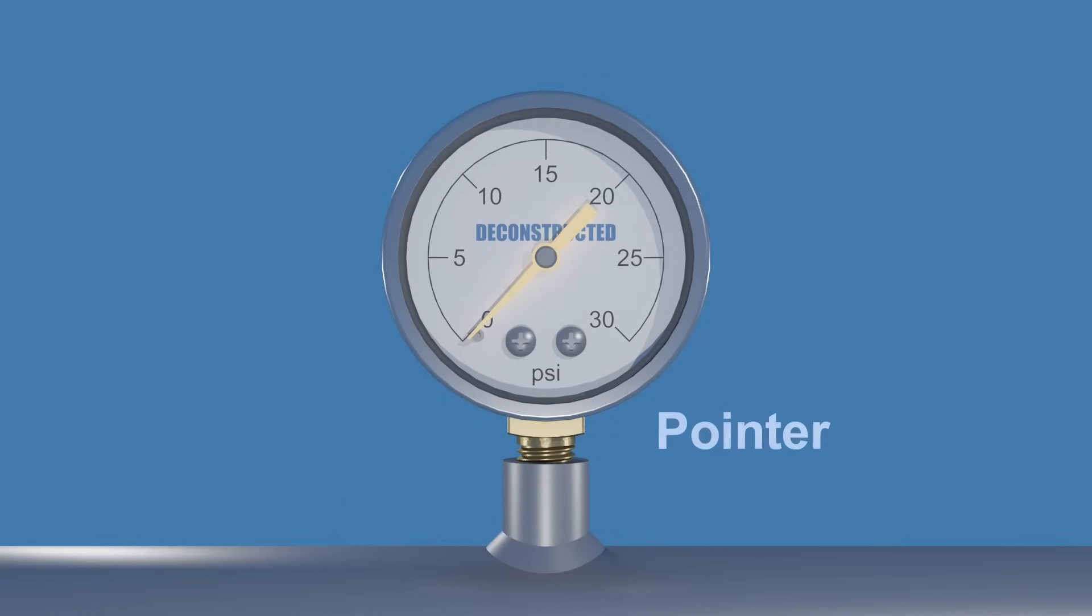This is the pointer and the dial. The pointer is connected to the internal mechanism and moves across a calibrated scale on the dial in response to the variation of pressure. Users can read the pressure value directly from the dial, where the pointer indicates the pressure currently prevailing.